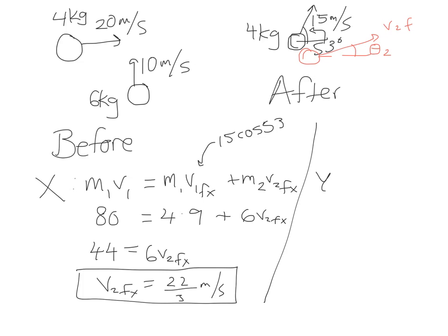Now the y direction, same idea except all the y quantities instead. Before the collision only m2 has momentum, so m2 v2. After the collision they both have a little bit of momentum, so m1 v1 final y plus m2 v2 final y. m2 v2 is 60, that's 6 times 10. m1 v1 final, you've got 4 times 15 sine 53. 15 sine 53 is going to be about 12, so 48, and then plus m2 v2 final y, that's 6 v2 final y.